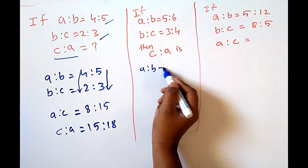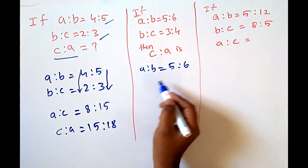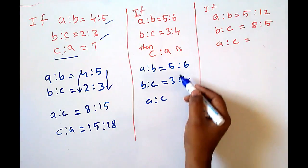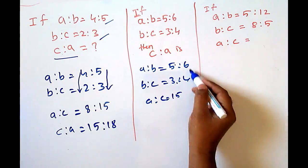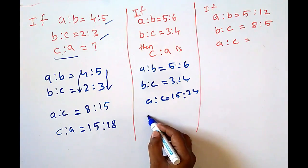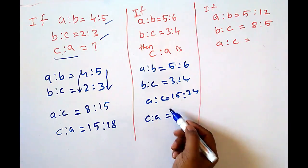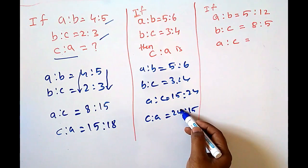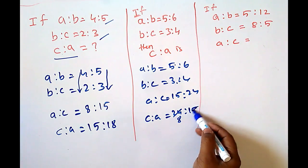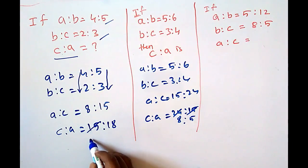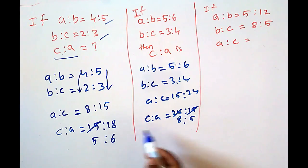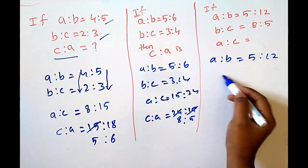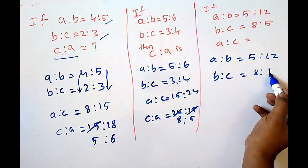In the same way, if A to B is 5 is to 6 and B to C is 3 is to 4, what is C to A? A to C is 5×3 = 15 to 6×4 = 24. We have to find C to A, not A to C, so that is 24 is to 15. Dividing by 3, we get 8 is to 5. If B to C is equal to 8 is to 5 and A to B is given, we find A to C similarly.